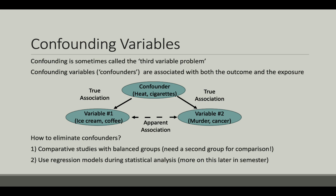Confounders can cause confusion if they're not assessed by the study investigators. To eliminate confounding, it's important to use comparative studies and make sure you're including all the variables that are associated with the exposure and the outcome. For example, if you want to know if coffee causes lung cancer, you should look at coffee drinkers and non-coffee drinkers, but make sure both groups have an equal number of smokers. We can also control for confounding using statistical analyses called regression modeling — we will discuss that later in the course.